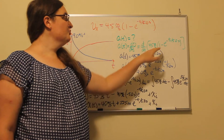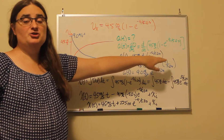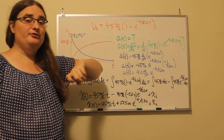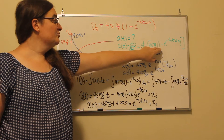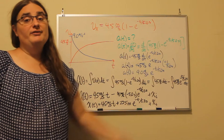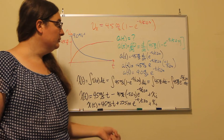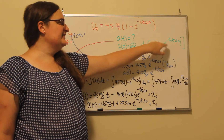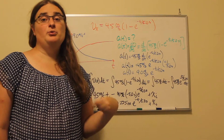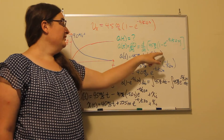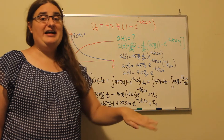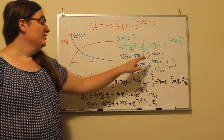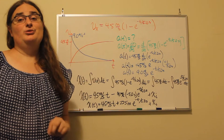When I go to take the derivative, this 45 meters per second is a multiplicative constant that can be pulled out front. The derivative of 1 is 0, so I need to take the derivative of minus e to the minus t over 5.0 seconds. I can also pull that negative sign out in front as a constant. So we have a chain rule situation.